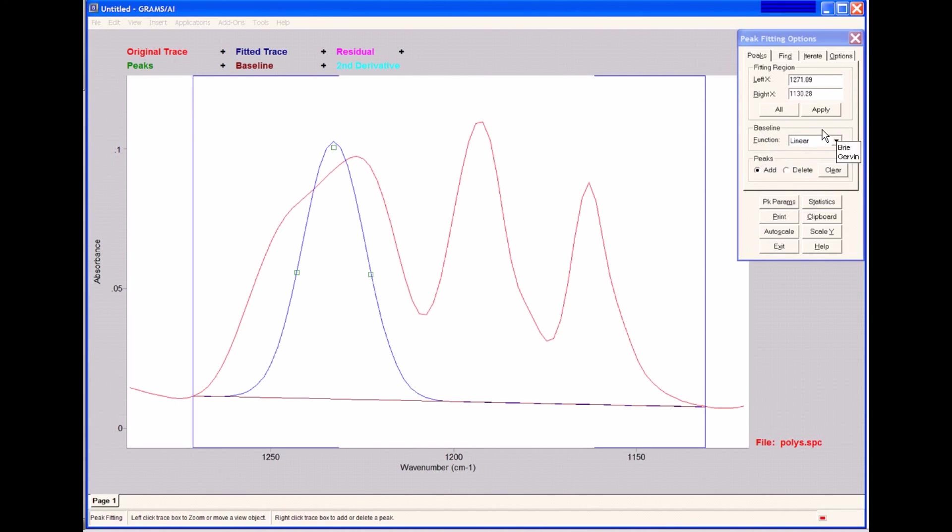We can choose the baseline function to use for our fit. We offer many different options. We can choose to have no baseline, a simple offset baseline, linear, quadratic, and cubic. Those are calculated when the fit is performed.